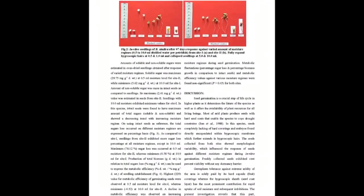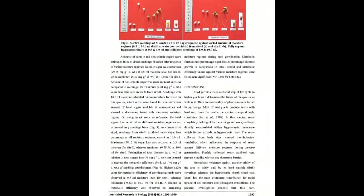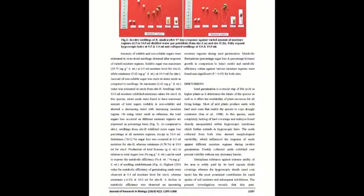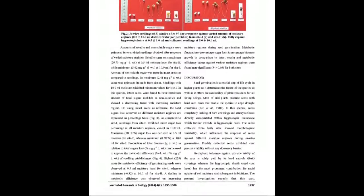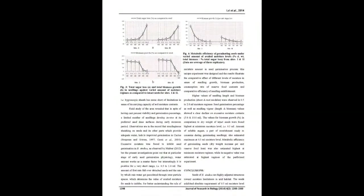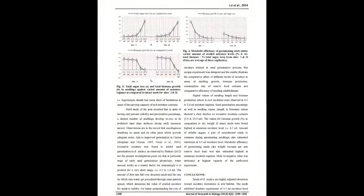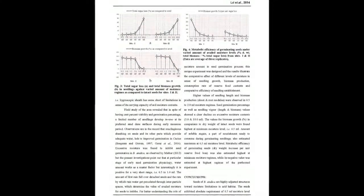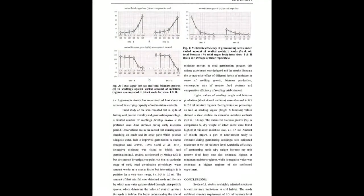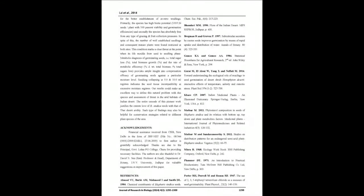Maximum amount of non-soluble sugar was found in intact seeds devoid of any inhibition. Seeds with 0.5 milliliters distilled water produced maximum amount of shoot biomass and soluble sugar, while seedlings with 1.0 milliliters had maximum root biomass. Seedlings treated with greater than 1.5 milliliters of distilled water showed a decreasing trend in all parameters. Excessive water was always found to cause seedling collapse and failure of its establishment.